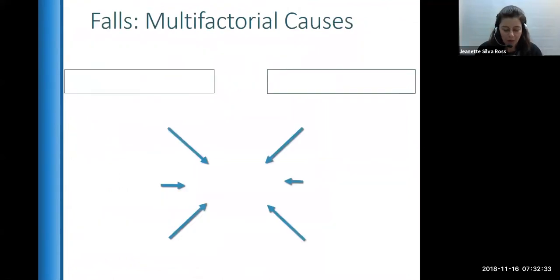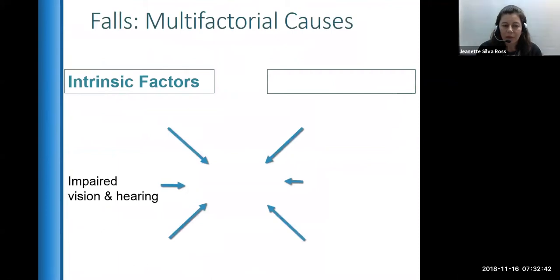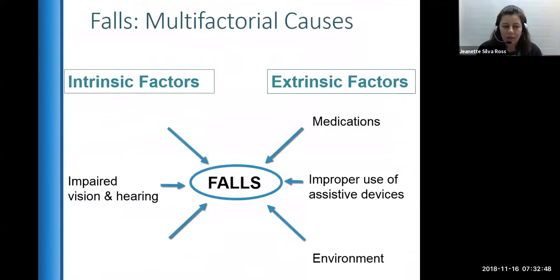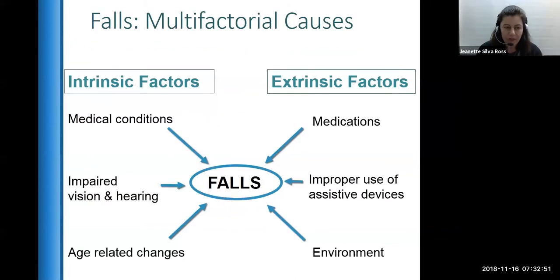When you think about falls, there are multiple causes. Intrinsic factors are related to the person — they may have impaired vision and hearing, or medical conditions. For example, if they have diabetes and neuropathy, they can't have good sensation of knowing where their feet are. Poor vision and hearing are common in older adults, who may have yellowed corneas and hearing difficulties.